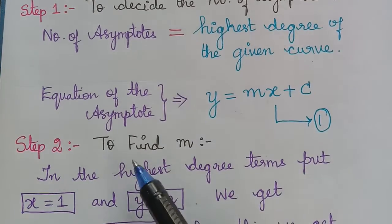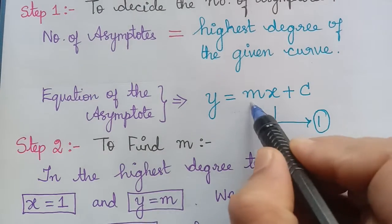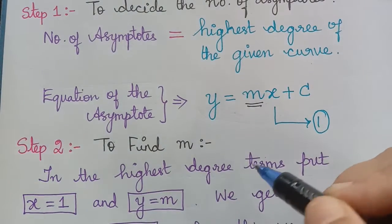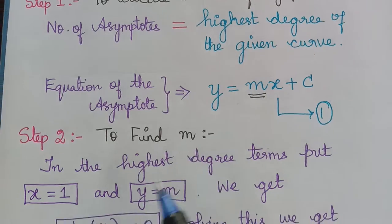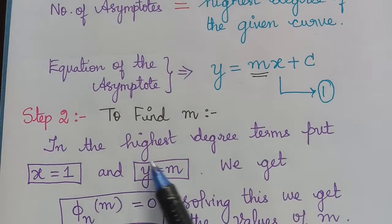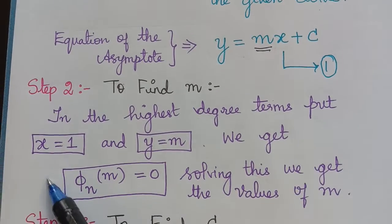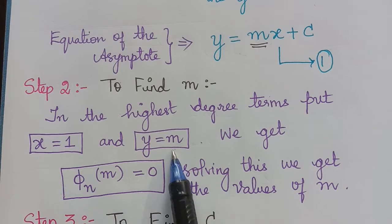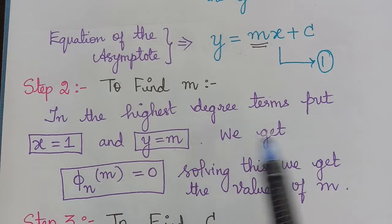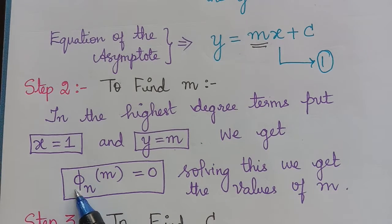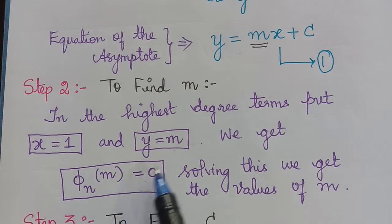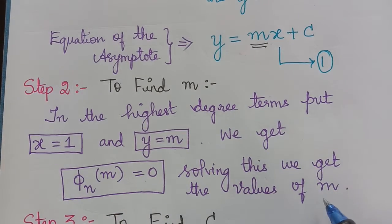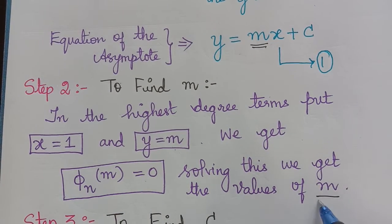The second step is to find the value of m. In the highest degree terms, we have to put x = 1 and y = m. We will then get an equation φₙ(m) = 0. On solving this equation, we will find the value of m.